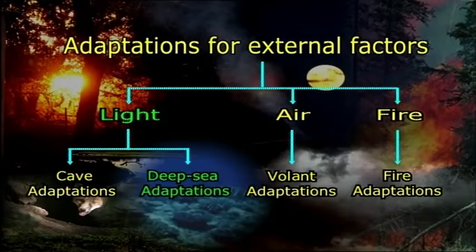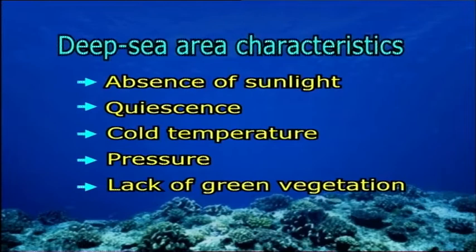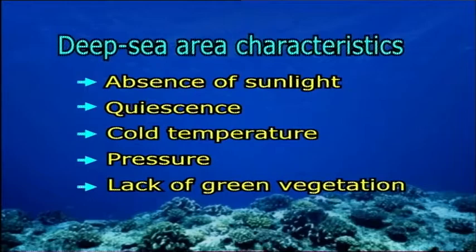Let us now get the idea of deep sea adaptations for the external factor light. Physical characteristics of the deep sea area include five remarkable conditions. First, absence of sunlight: the limit of penetration of the sun's rays is about 200 fathoms, and beyond that depth there is no sunlight.